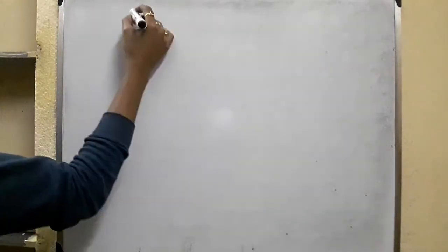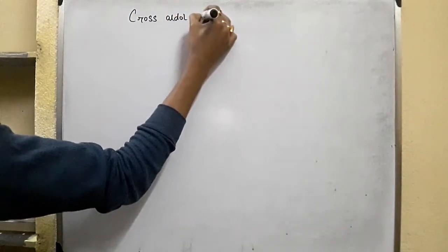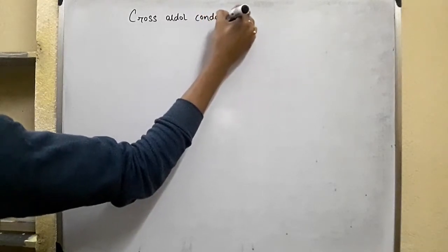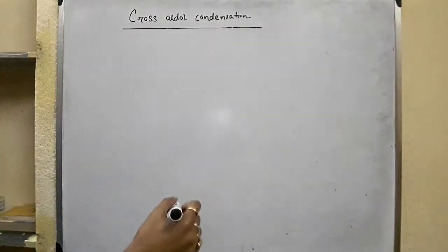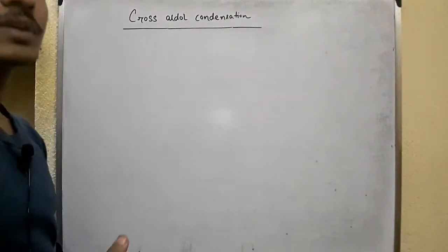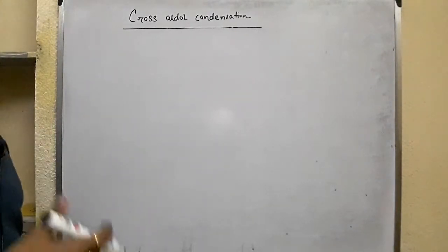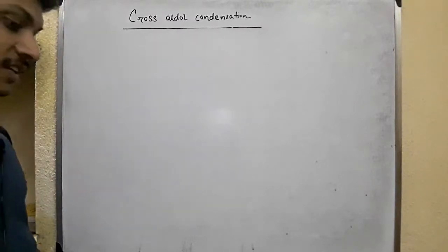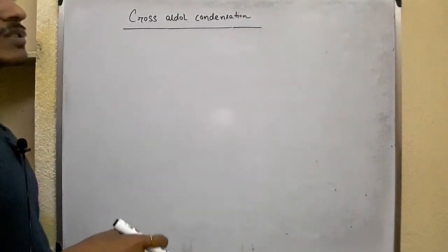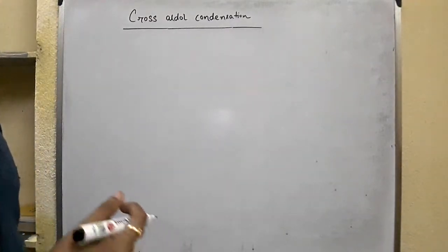Let's discuss cross aldol condensation. We have discussed self-condensations, the dimerization reactions of a carbonyl compound. But aldol condensation is not restricted to the condensation of same carbonyl compounds — it can occur between different aldehydes or ketones, or between one aldehyde and one ketone. When two different carbonyl compounds react in presence of a dilute base, that reaction is called cross aldol condensation or mixed aldol condensation.